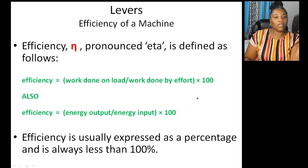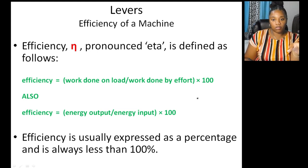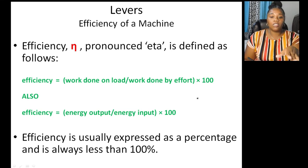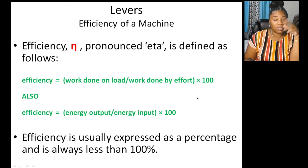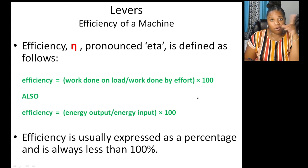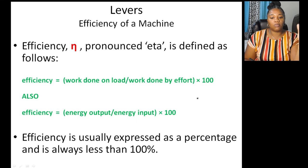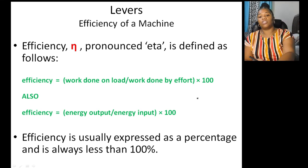Efficiency (symbol eta, η) = (work done on the load / work done by the effort) × 100. Efficiency is always expressed as a percentage and is always less than 100%. No machine is ever 100% efficient. If you get over 100%, you've divided the wrong way — always put the smaller number over the larger number.